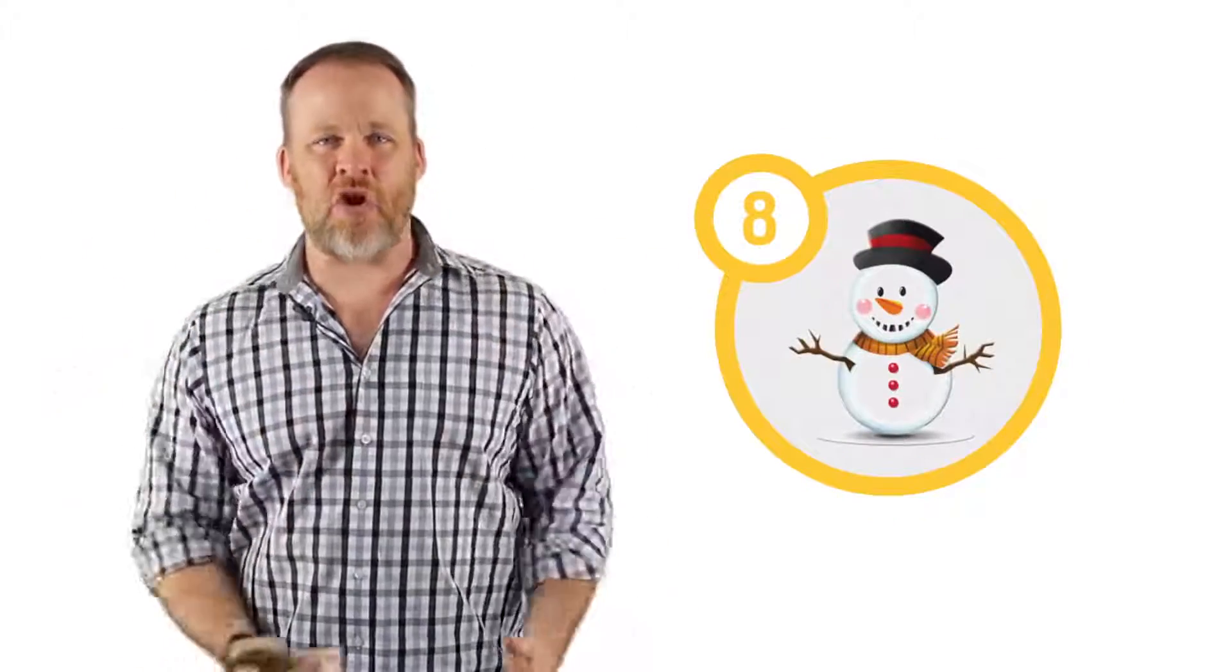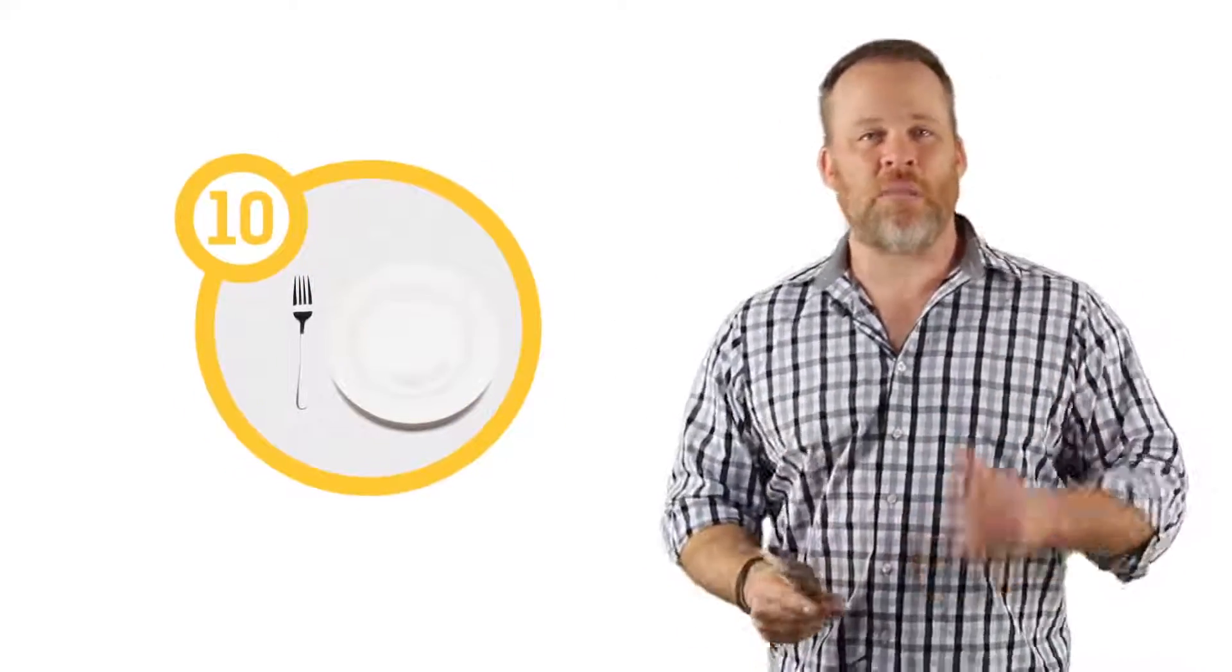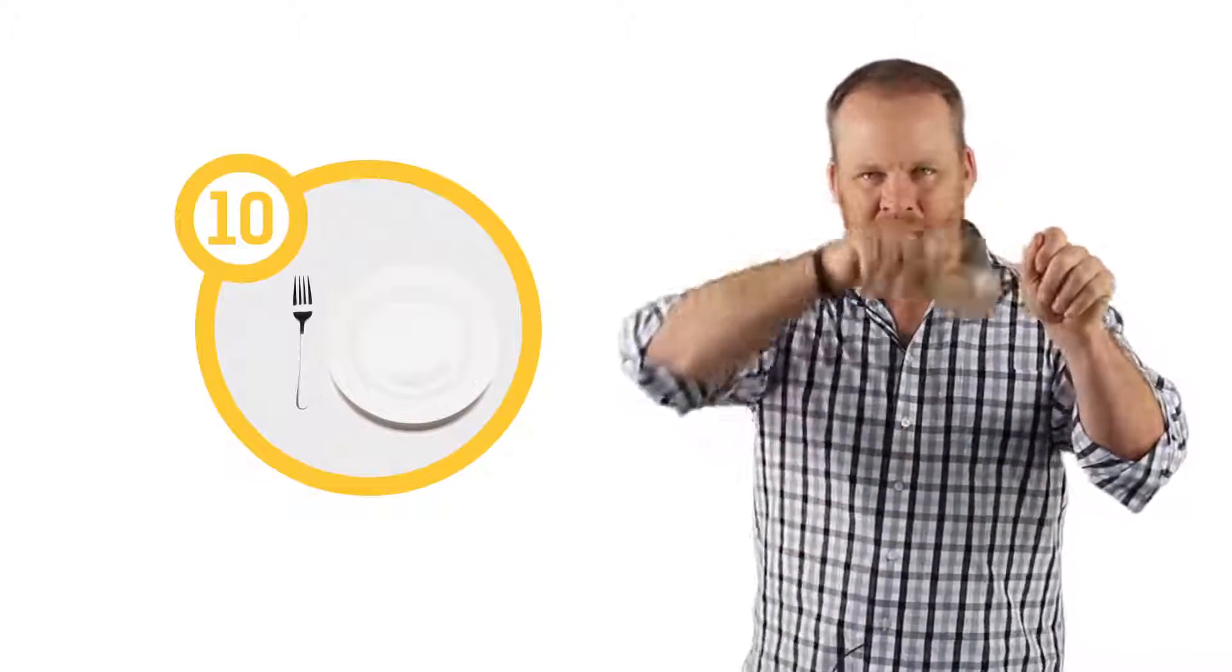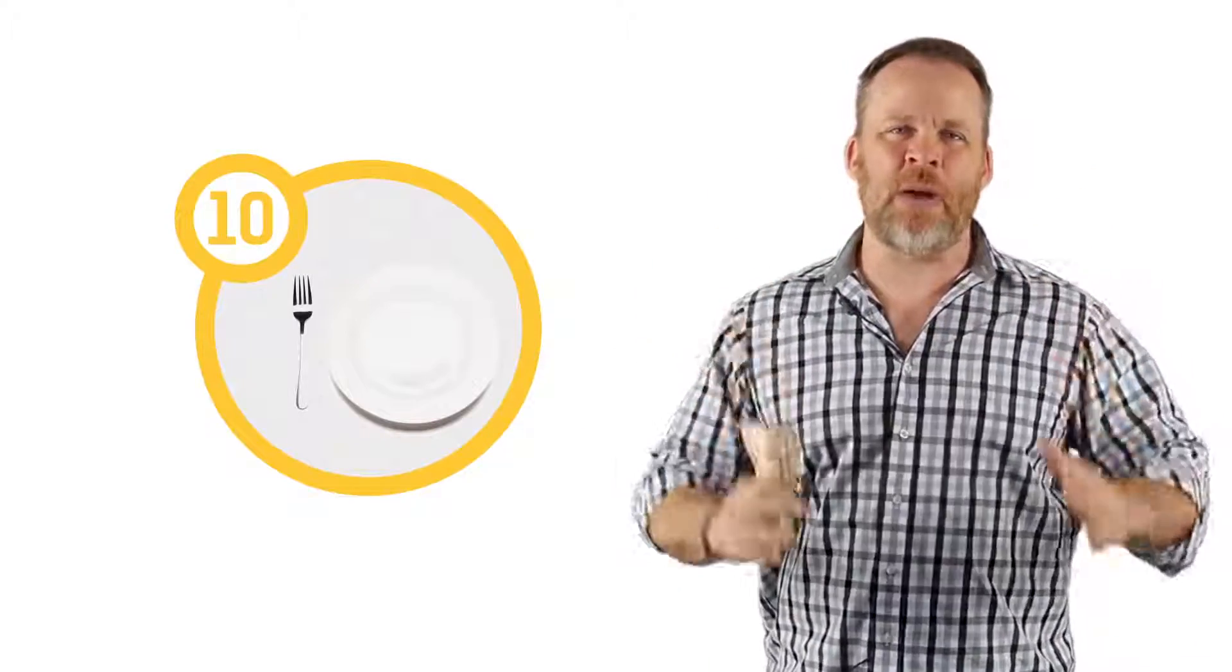Number eight for me was a snowman because an eight kind of looks like a snowman. Number nine I made it a balloon because the balloon looks like the circle on a nine and then the string coming down looks like the line on the number nine. Ten for me was a plate and a fork because a fork is the one and a plate looks like a circle that makes up the number ten. And I did this all the way up to twenty.